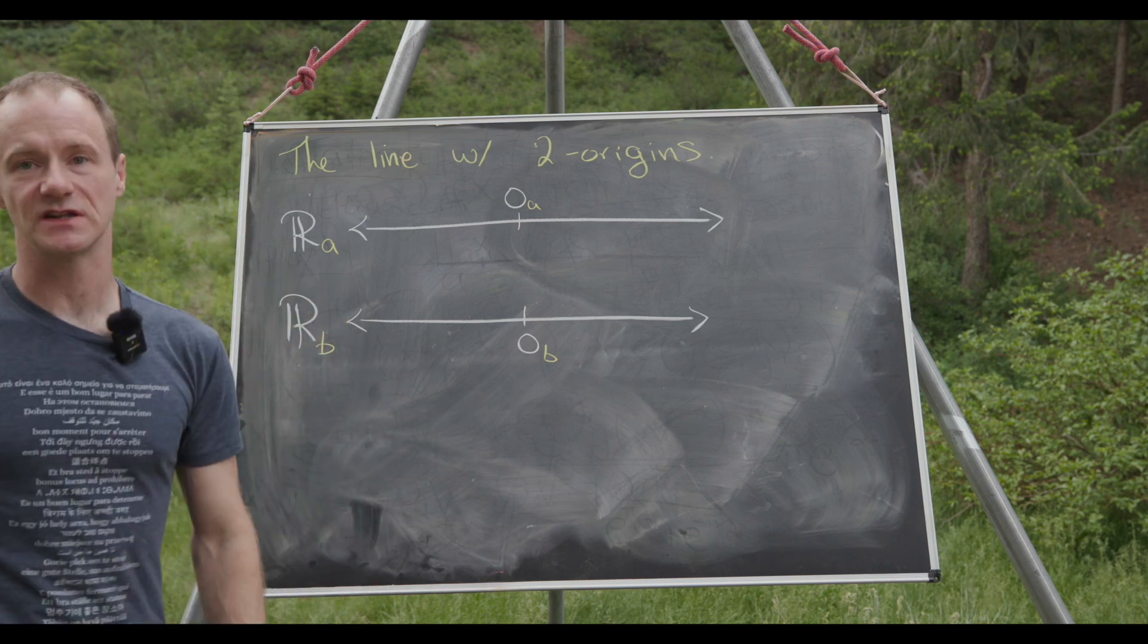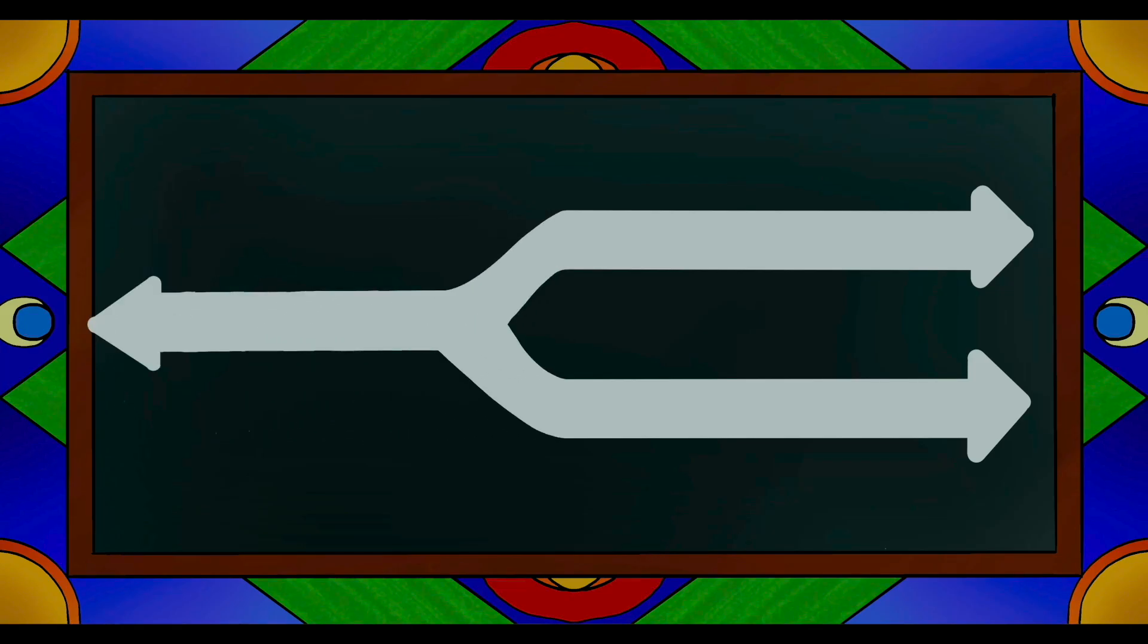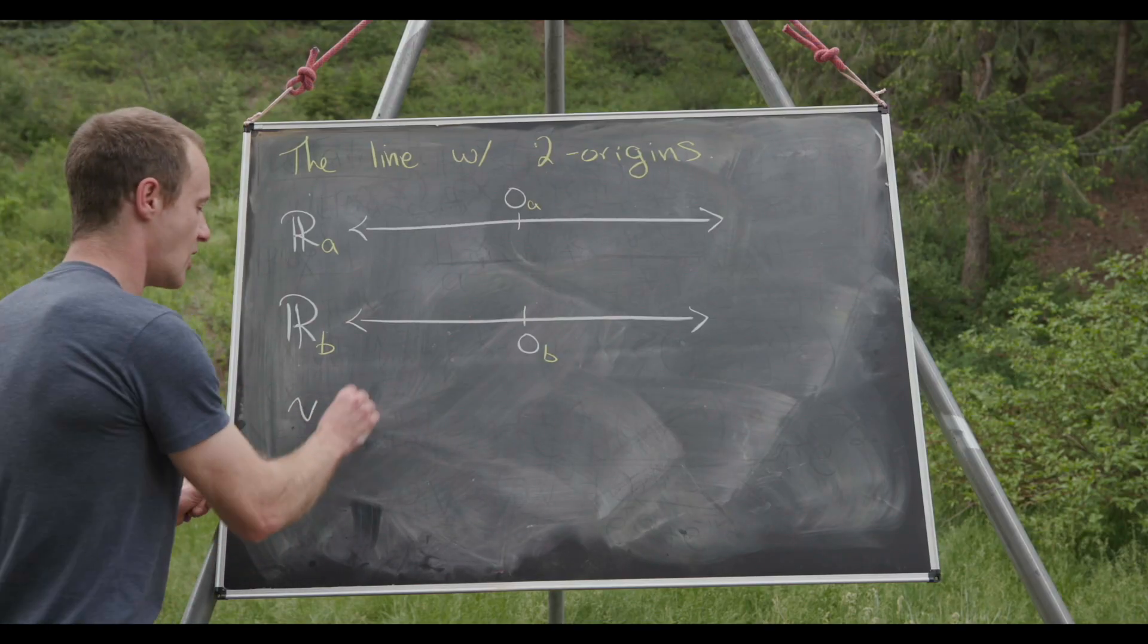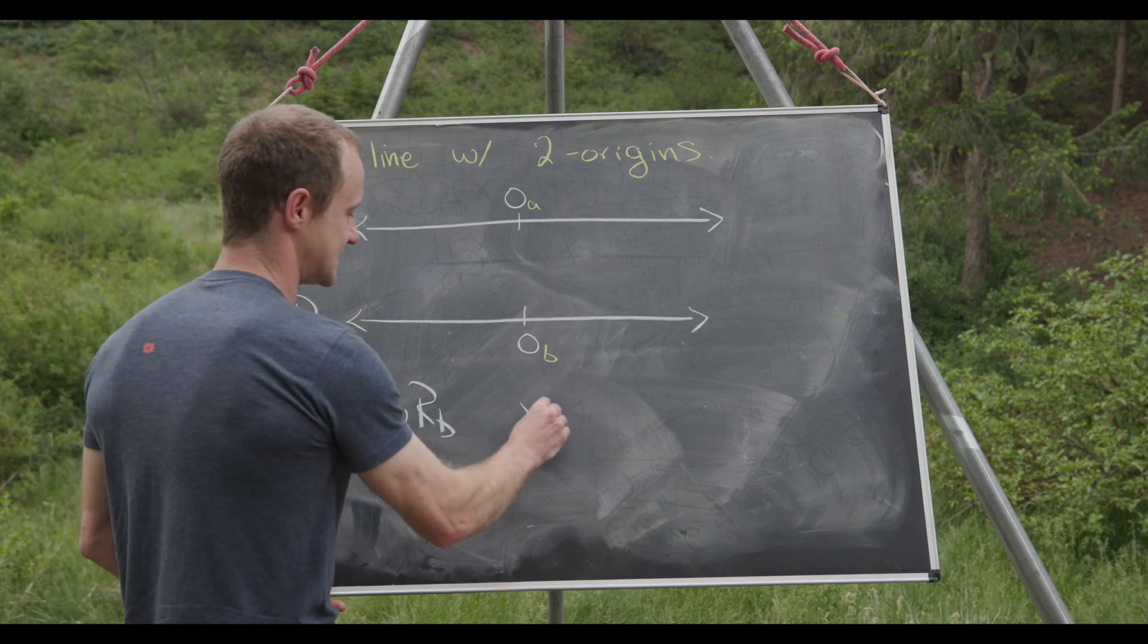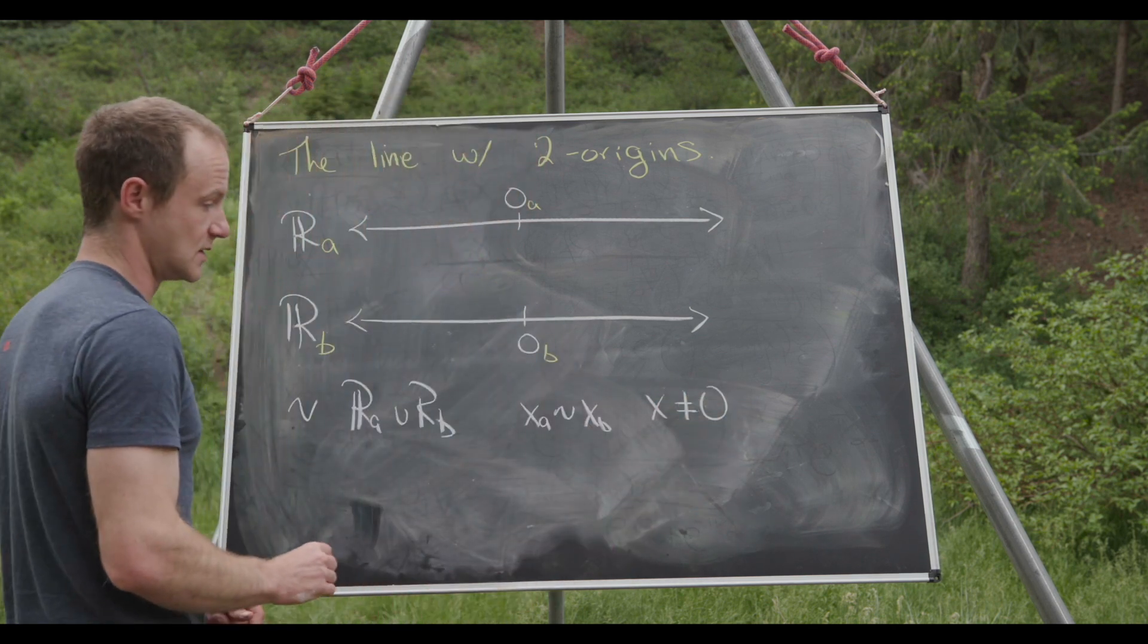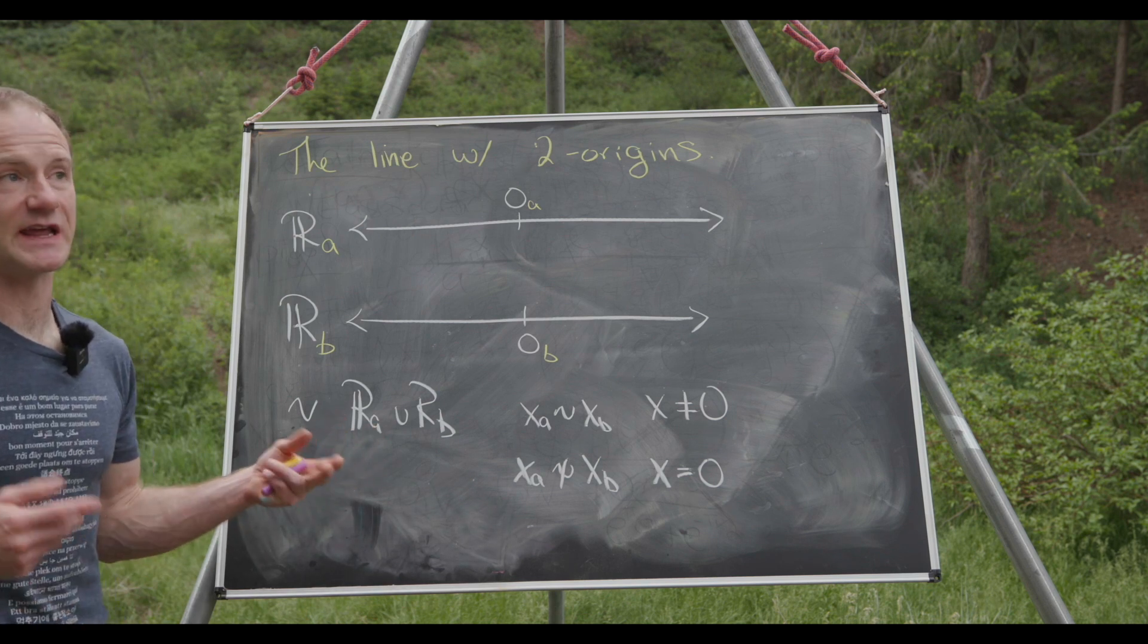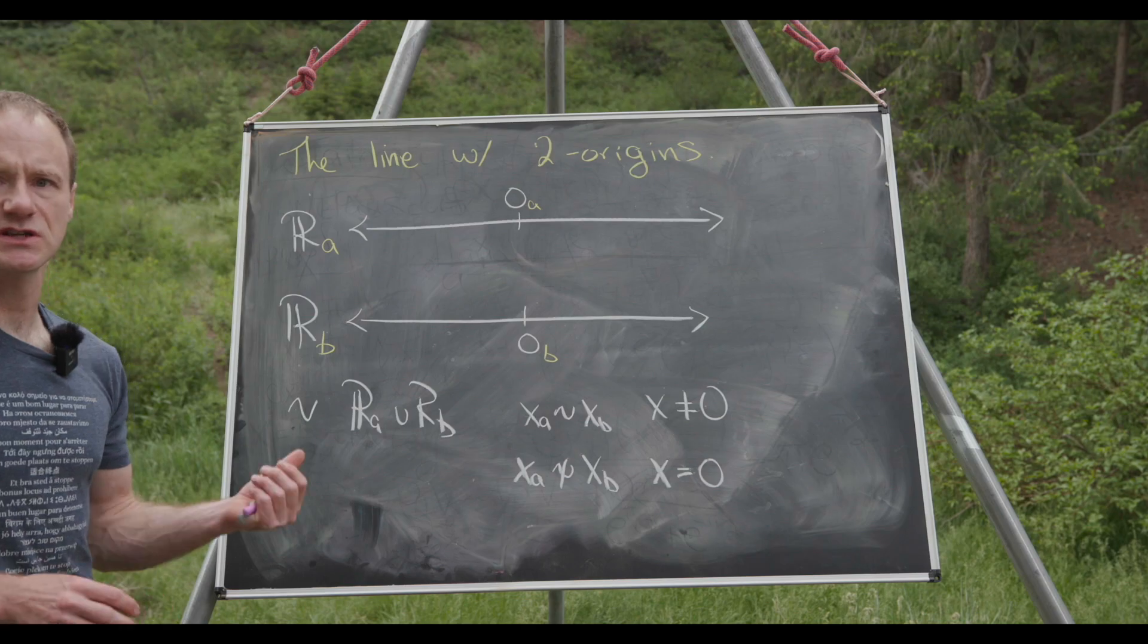And then from here we'll take these two real lines and we'll glue them together. But we will not glue them together everywhere. We'll glue them together everywhere except the origin. So if you want to get fancy, this is like defining an equivalence relation which I'll call tilde on the set R_a union R_b. And so what that does is it sets x sub a is related to x sub b if x is not equal to zero. But then x sub a is not related to x sub b if x is equal to zero. But while that's the careful way to do it, I think the best way to intuitively think about it is that you're gluing these two lines together everywhere except the origin, which leaves you with a picture like this.